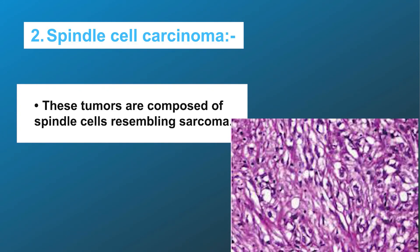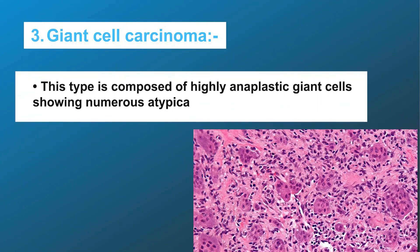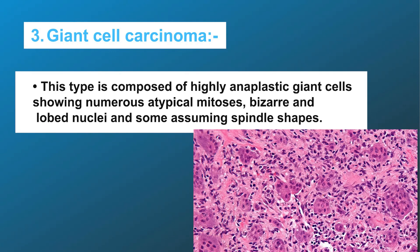Two: spindle cell carcinoma — these tumors are composed of spindle cells resembling sarcoma; some tumors may contain an obvious sarcomatous component such as areas of osteosarcoma, chondrosarcoma, or rhabdomyosarcoma. Three: giant cell carcinoma — this type is composed of highly anaplastic giant cells showing numerous atypical mitoses, bizarre and lobed nuclei, and some assuming spindle shapes.